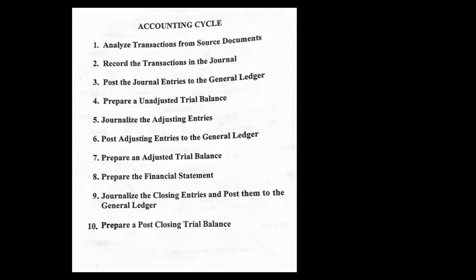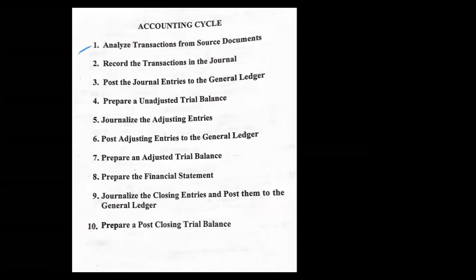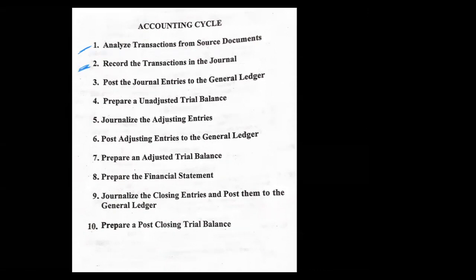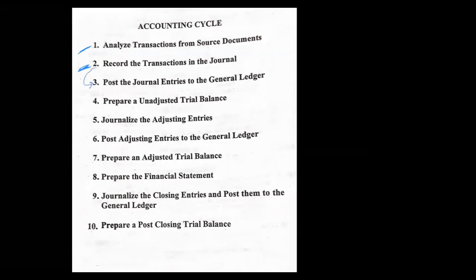If you're using a computer, someone still has to analyze transactions. They're going to get paperwork — sales agreements, purchase invoices, checks — and they're going to determine what accounts need to be debited or credited. Then they sit down at the computer and make the entry. The computer is not going to do that for you. They tell the computer: debit cash for 10,000, credit the capital account 10,000. Once you journalize that, the computer will automatically post those journal entries to the general ledger.